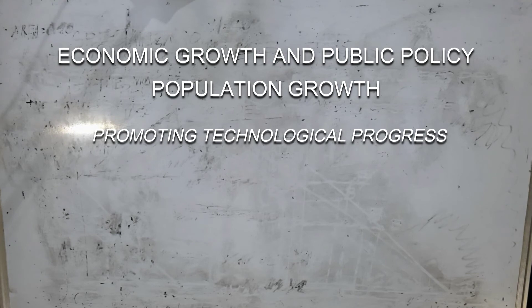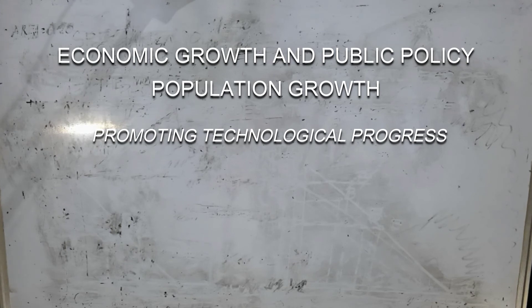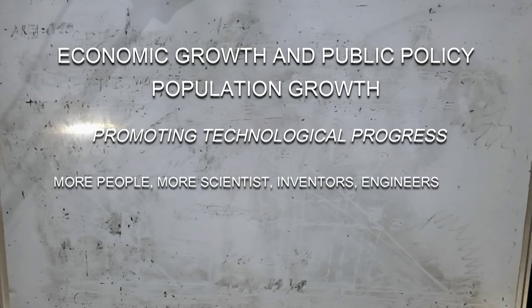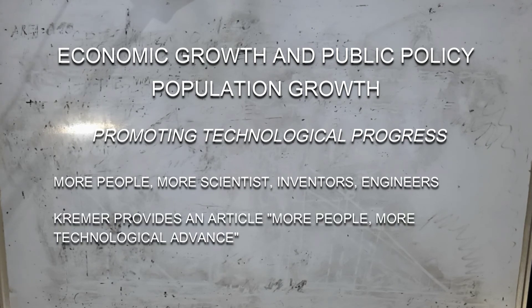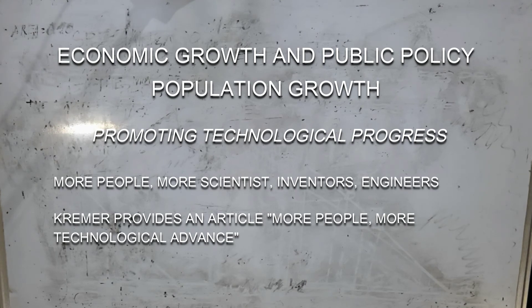Rapid population growth may depress economic prosperity by reducing the amount of capital each worker has. But it may also have benefits — more people means there can be more scientists, more inventors, more engineers. Some economists have suggested that world population growth has been an engine for technological progress and economic prosperity. The mechanism is simple: if there are more people, there are more scientists and inventors to contribute to technological advances that benefit everyone.